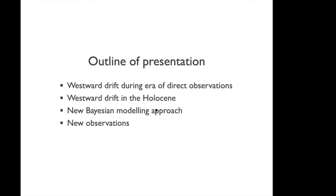A brief outline: first I will give background about westward drift and potential mechanisms during the era of direct observations. Then I will show results from our group looking at westward drift in the Holocene, introduce our new Bayesian modeling approach, and show some brief results from this new model.